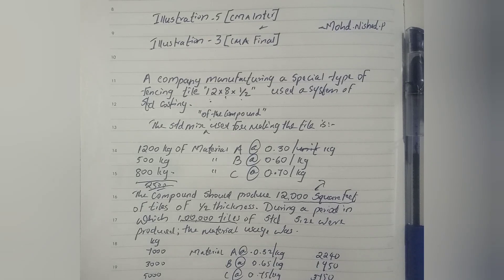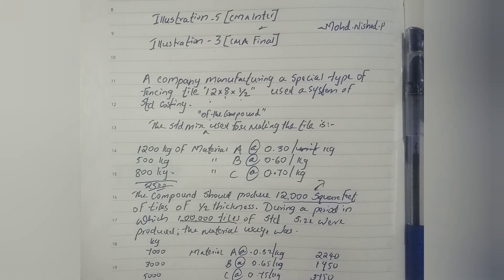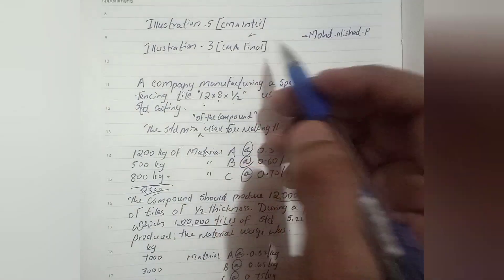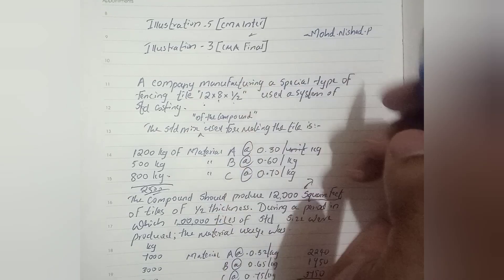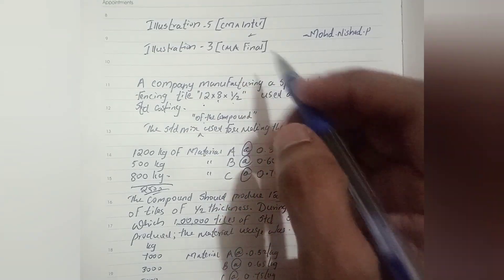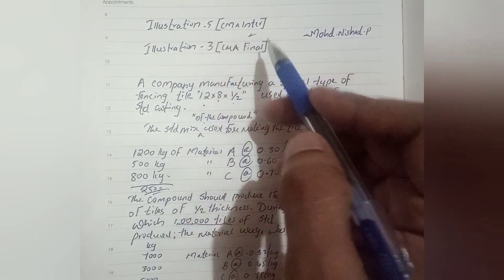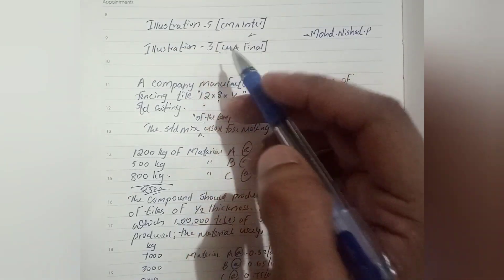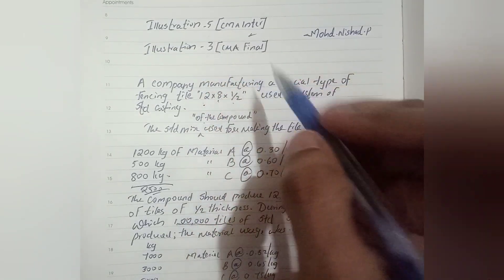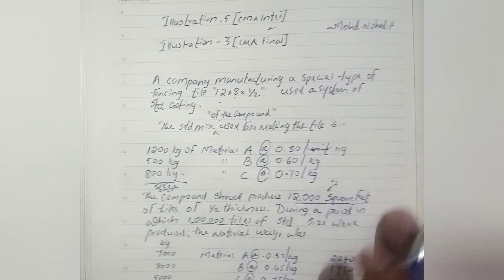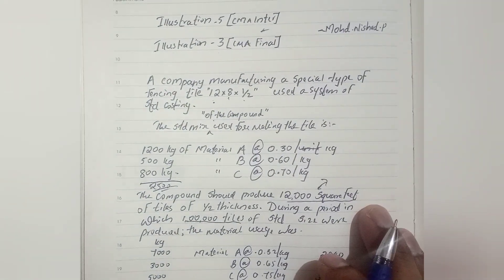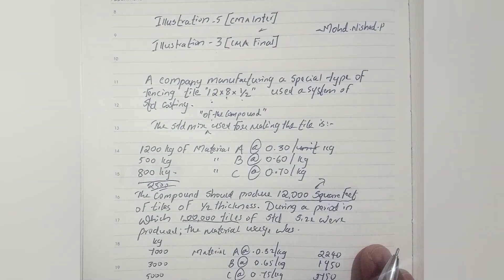In this video, we are going to talk about CMA Final and CMA Intel, which is a common question. Intel is Illustration 5 and Final is Illustration 3. I would like to separate these problems.